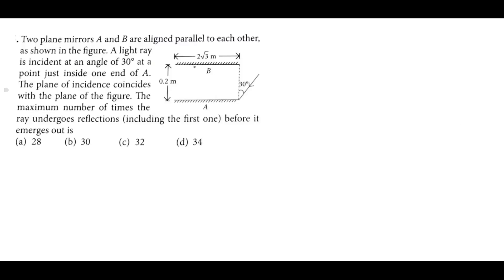A problem is that two plane mirrors A and B are aligned parallel to each other as shown in the figure. A light ray is incident at an angle of 30 degrees at the point just inside one end of A. The plane of incidence coincides with the plane of the figure.